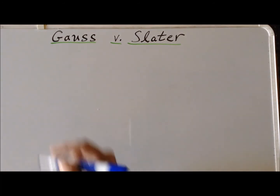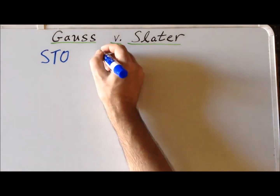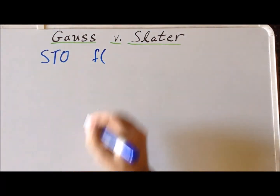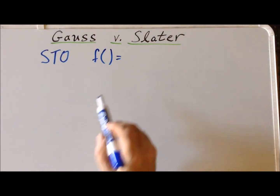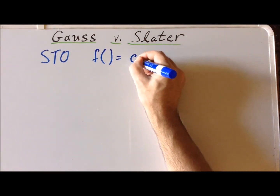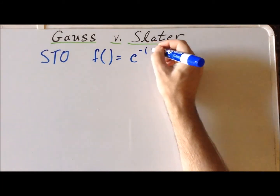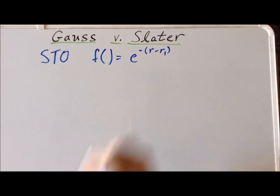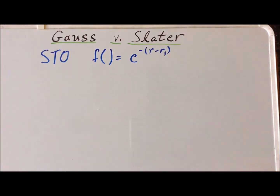We can recognize a Slater-type orbital, which we usually write as STO, as a function that has factors of x, y, z and powers of that. But in addition, the most important part, it has an exponential part, which we can write as e to the (r minus r1) power. The important thing here is that the exponent of e is the variable to the first power, and that's how we can recognize Slater-type orbital functions.